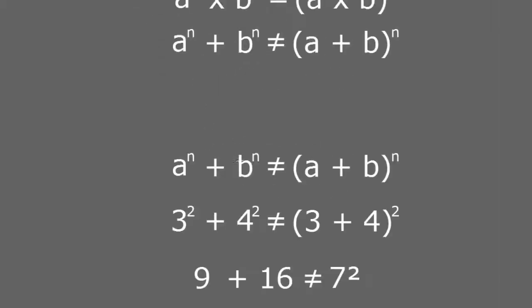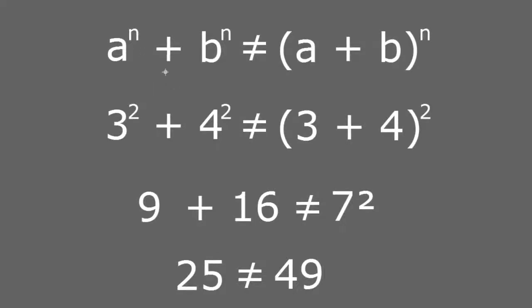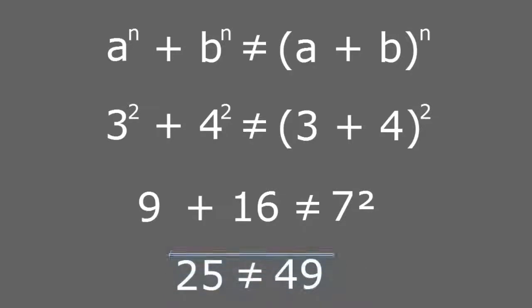Let me show you here. I want to show you that a to the power of n plus b to the power of n simply is not equal to a plus b, all of that in parentheses raised to the power of n. If that were true, then 3 squared plus 4 squared should be equal to 3 plus 4, all squared. Now, 3 squared is 9 and 4 squared is 16, and 9 plus 16 equals 25.